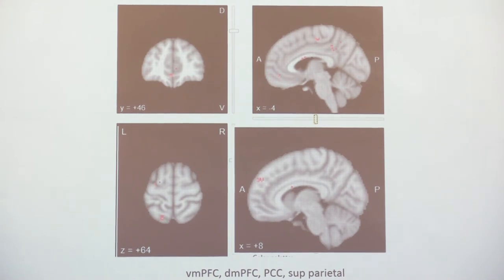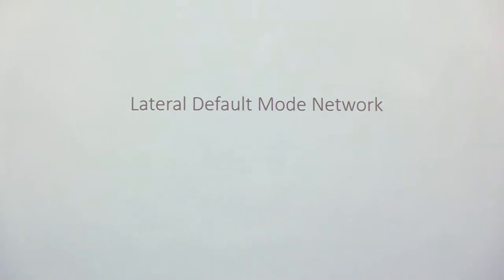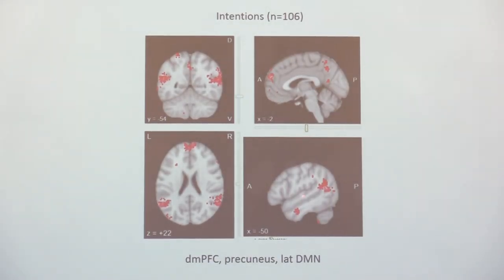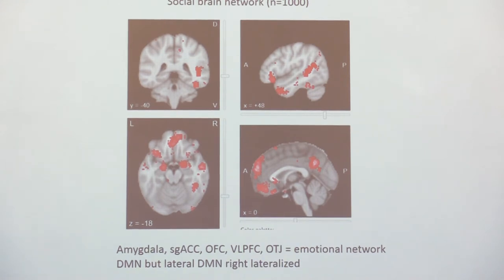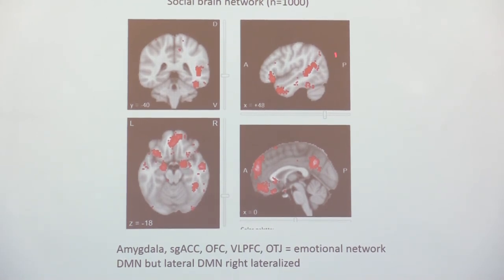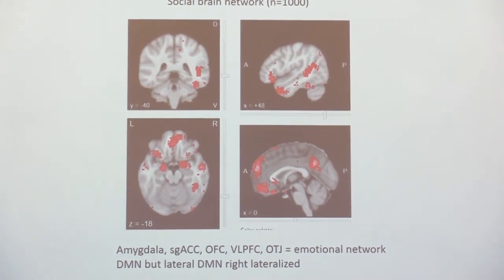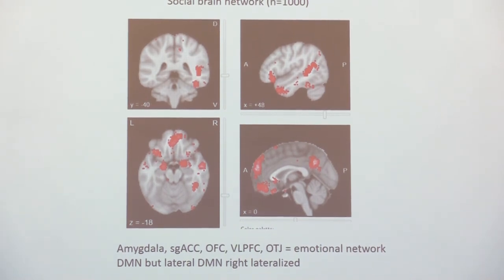Directed behavior is related to what you want to do at a given moment, whereas the lateral default mode network is predominantly related to the intentions of others — you try to pick up the intentions of others using your lateral default mode capacity. How your brain processes social signals is not surprising: it uses predominantly the left-sided lateral aspect. Picking up the intentions from others and relating to others involves your default mode network — posterior, anterior, and lateral network.